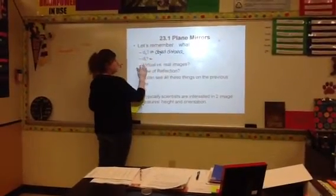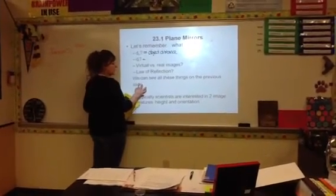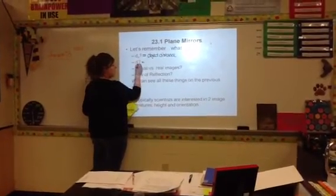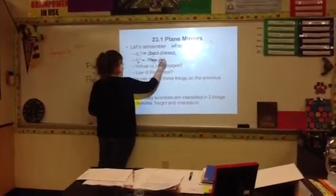DI, if I have objects that I'm looking through through the mirror, I'm going to have also an image. So this is going to be my image distance. So DI is image distance.